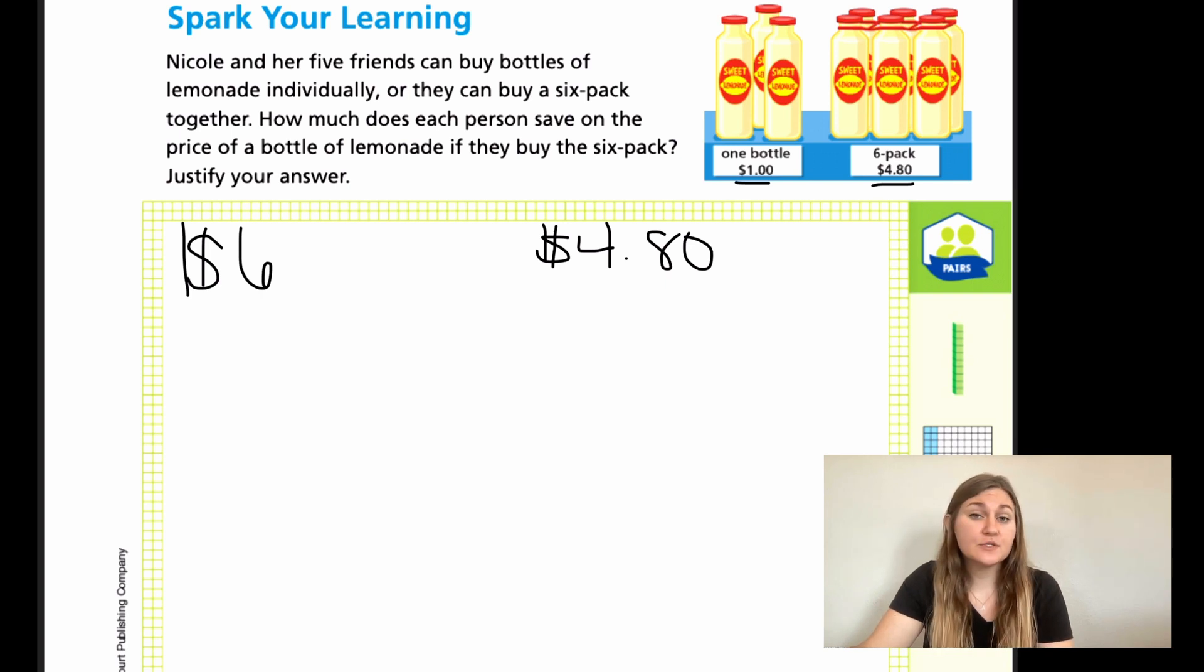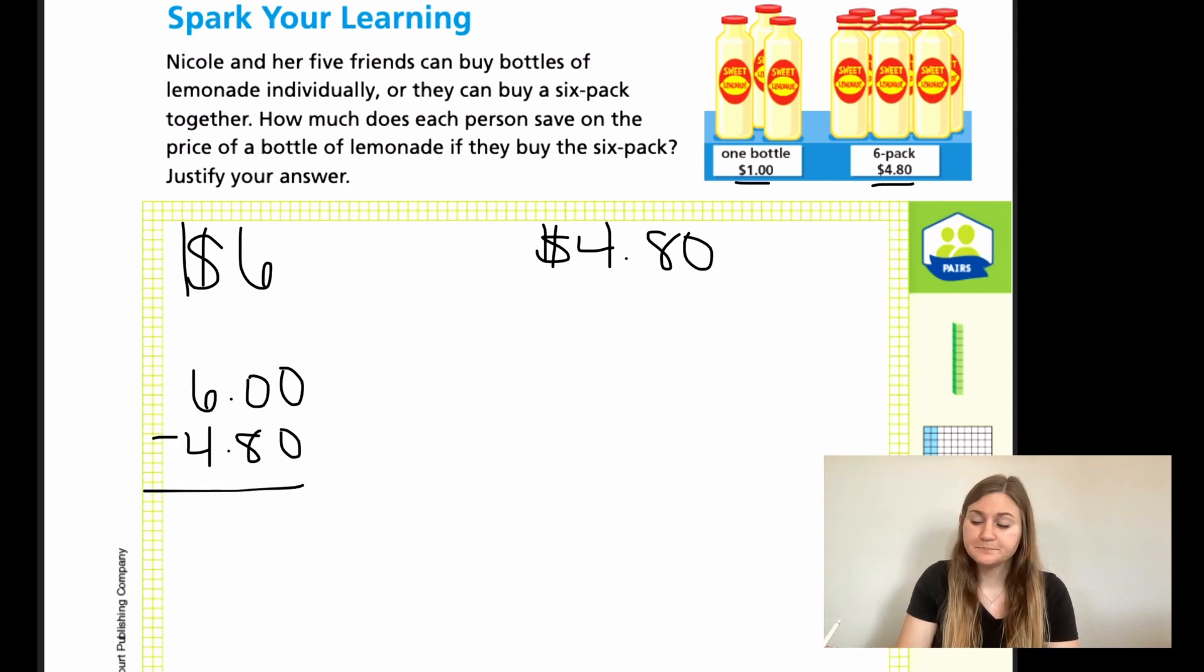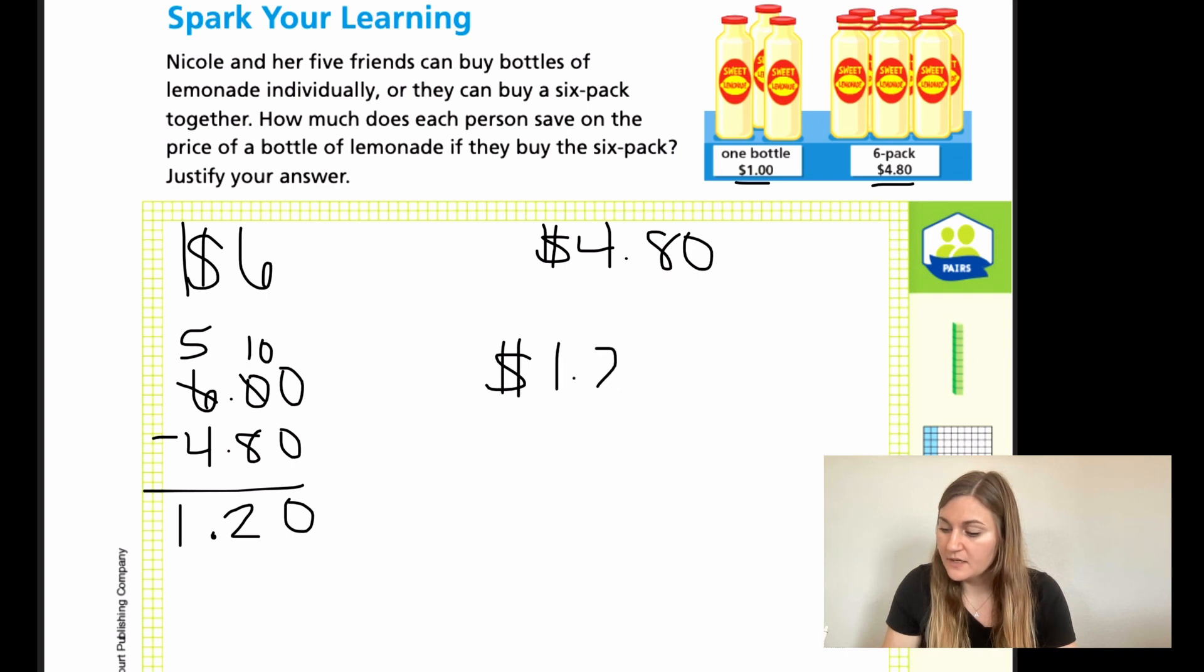So as a group, how much money did they save? Well, if we were going to spend $6 and we only ended up spending $4.80, how much money as a group did we save? Well, that is a subtraction problem. Zero minus zero is zero. I can't do zero minus eight, so I'm going to go next door and borrow. 10 minus eight is two, drop the decimal point straight down, and then I just have one. So I know as a group we saved $1.20. So as a group of six people, we saved $1.20.